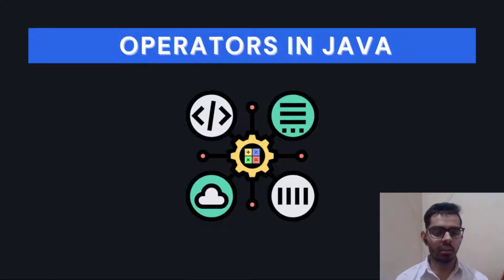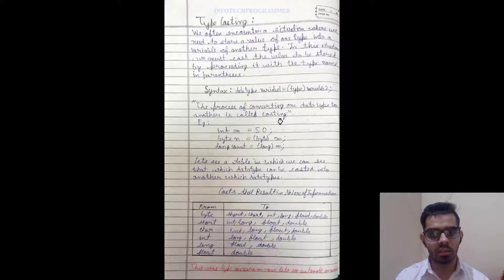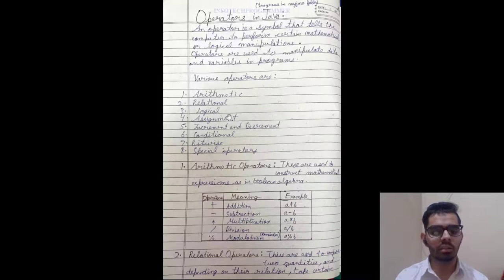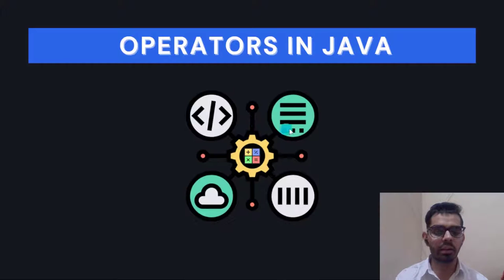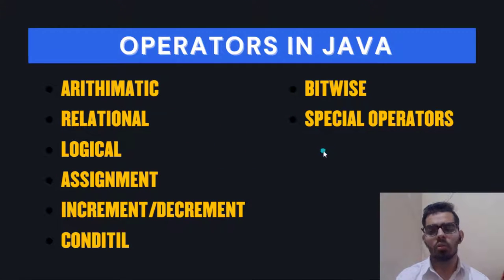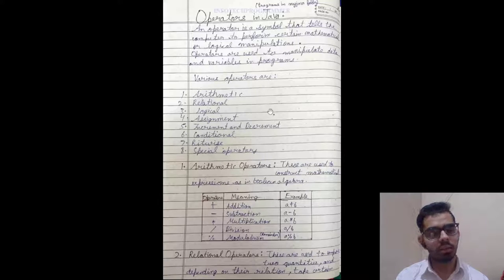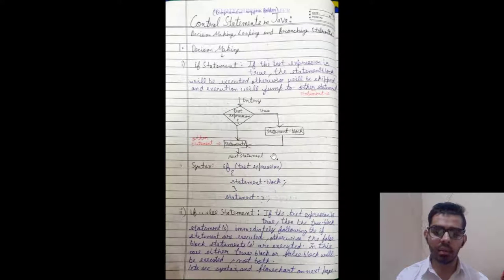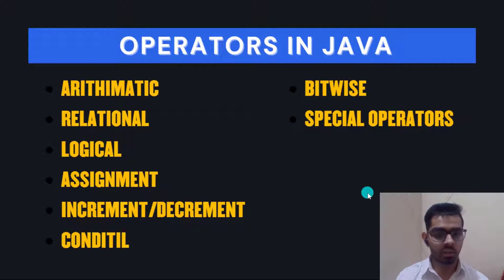Next in the roadmap we have operators in Java. Operators are symbols like plus, minus, multiply, divide, and many more used in Java and other programming languages. There are eight types of operators: arithmetic, relational, logical, assignment, increment/decrement, conditional, bitwise, and special operators. I've explained all of these with examples in the notes.